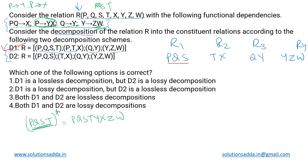Finding the candidate keys for D2's sub-relations: R1 has PQS, which is a subset of the original candidate key, so PQS entirely forms the candidate key for R1. For R2 with TX, neither T nor X can derive each other, so TX collectively is the candidate key. For R3, Q derives Y so Q is the key. For R4, Y is the key.